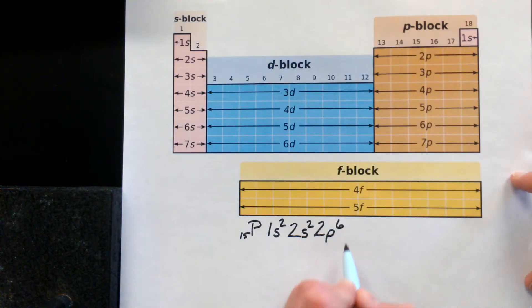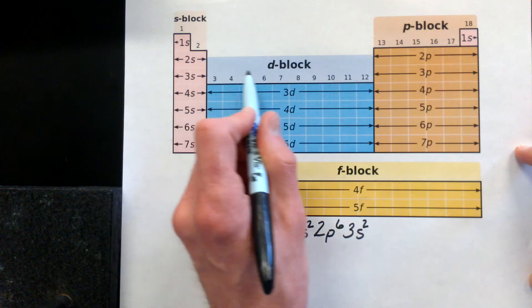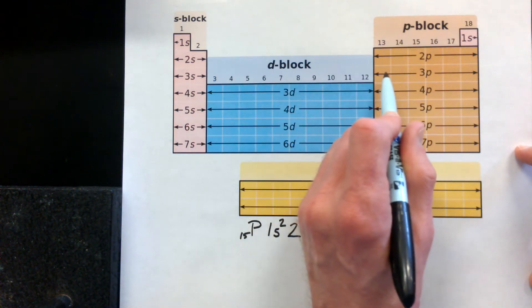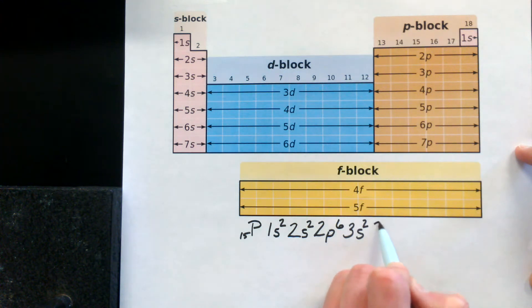The next two go into the 3s orbital, two electrons there - the number eleven and number twelve electrons. At this moment we're at magnesium. Let's finish it. We're still on the third energy level. We're going to phosphorus, so we're going to go to the third level, p orbital, and three electrons. There's the fifteen electrons for phosphorus.